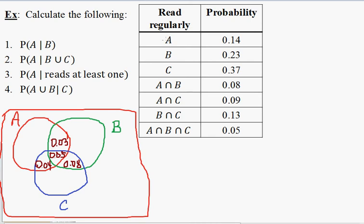The probability of A is 0.14. We already have these slices: 0.03 here, the middle is 0.05, the next one is 0.04 — so 0.12 total, which leaves 0.02, so that the sum of the areas in the red circle is 0.14. For the green circle, we've already drawn out 0.03, then 0.05, then 0.08 — so 0.16. They have to add up to 0.23, so that leaves 0.07 here.